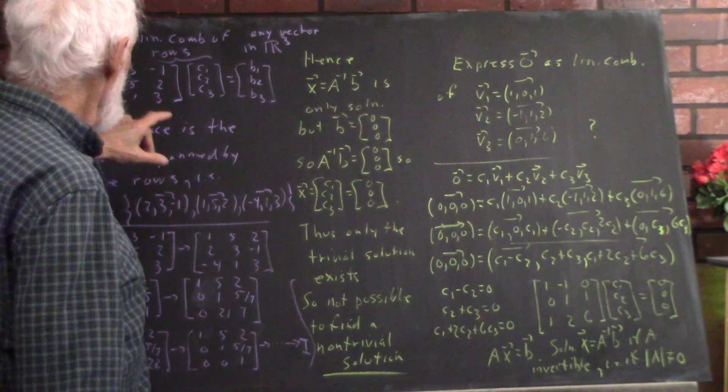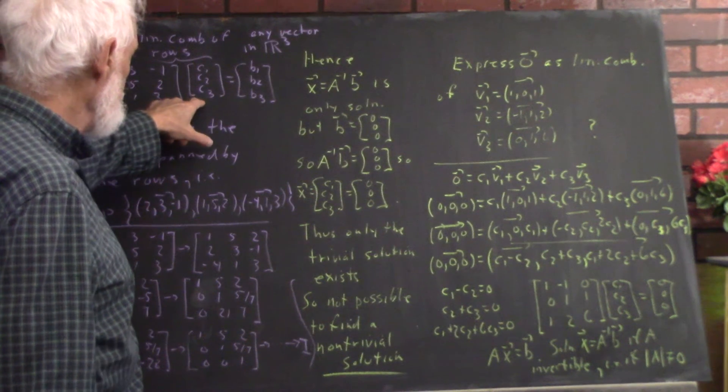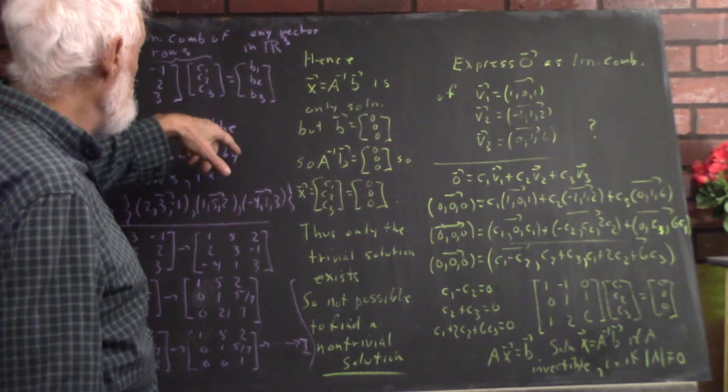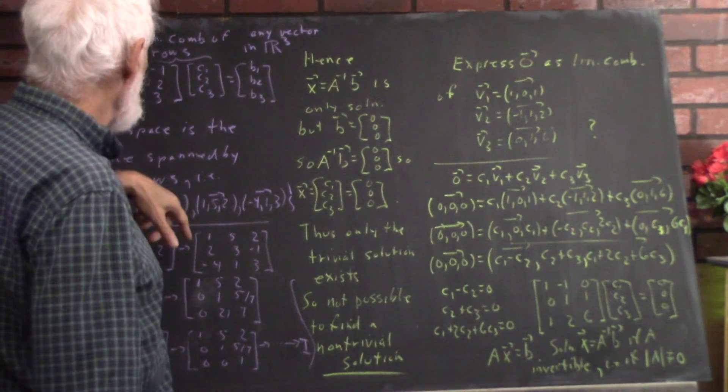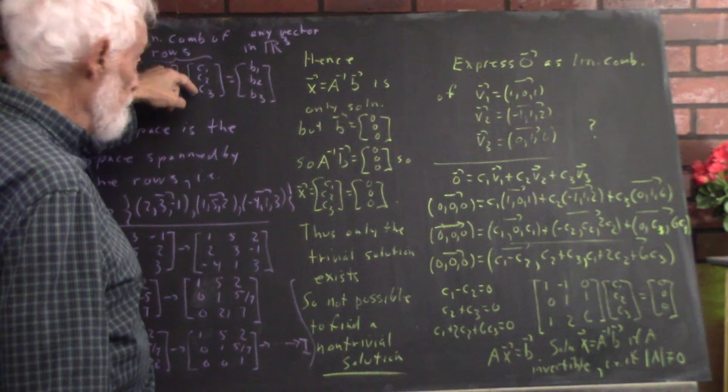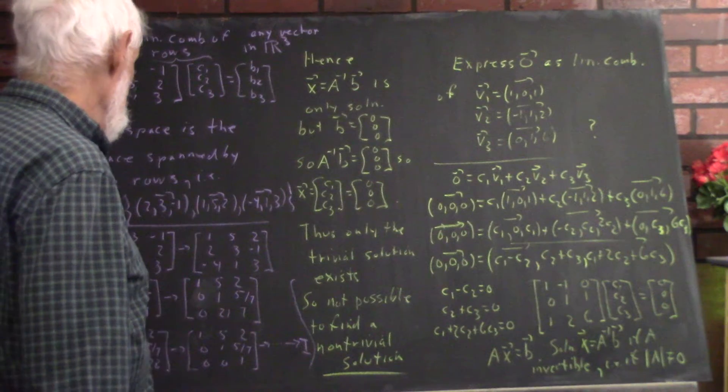Meaning, that if you were trying to find a linear combination that equals zero, if b1, b2 and b3 were zero, just like over here, that there would be only the trivial combination where C1, C2, C3 is zero.